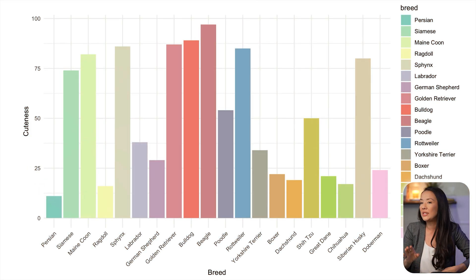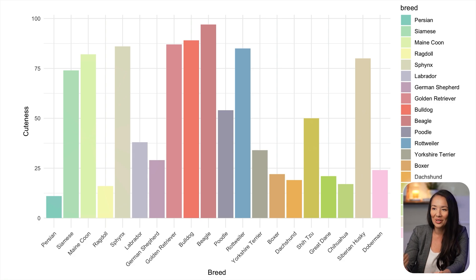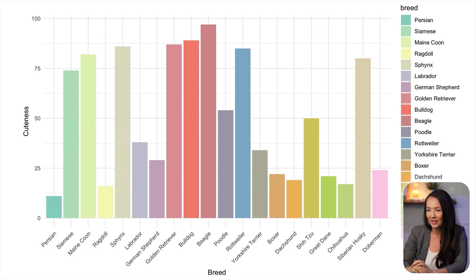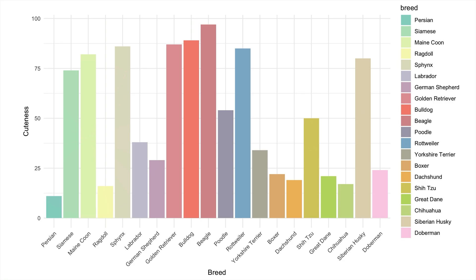Here's a more specific example with breeds of cats and dogs and their cuteness on the y-axis — entirely fictional data. We have the same color encoding as before and run into a similar issue: you start to cluster the greens together, the pinks together, and the oranges together, and that has no meaning at all. It's adding meaning that is fully arbitrary based on the encoding itself.